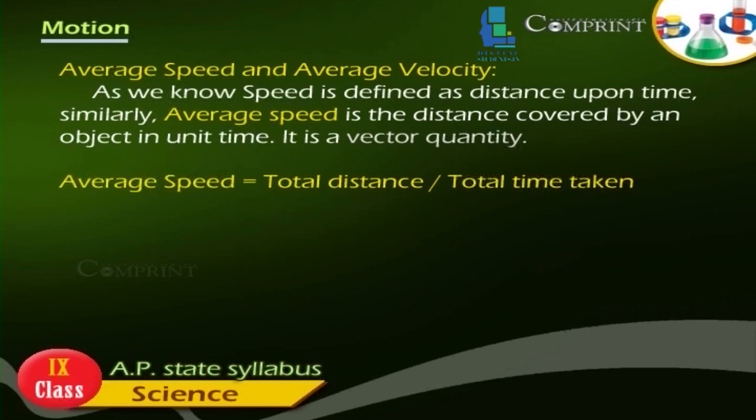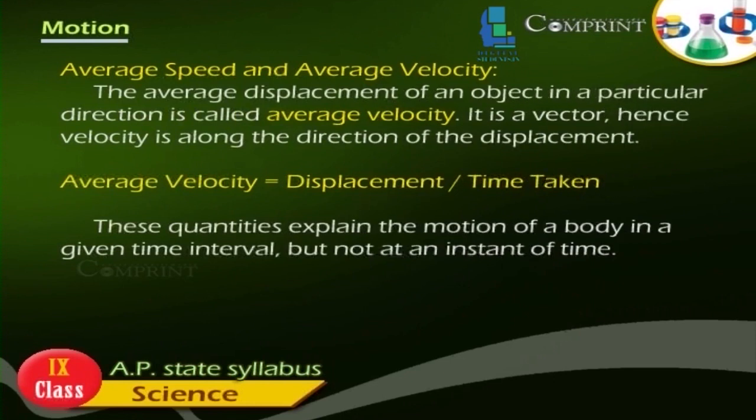Average speed is equal to total distance by total time taken. The average displacement of an object in a particular direction is called average velocity. It is a vector. Hence, velocity is along the direction of the displacement. Average velocity is equal to displacement by time taken. These quantities explain the motion of a body in a given time interval but not at an instance of time.